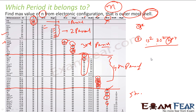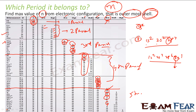Let's take sodium, atomic number 11. Its electronic configuration is 1s², 2s², 2p⁶, 3s¹. The values of n are 1, 2, 2, and 3. So the maximum value of n is 3, and therefore sodium is in the third period.